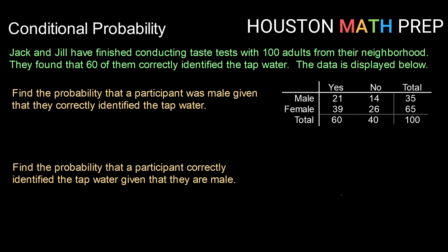We want to find the probability first that a participant was male given that they correctly identified the tap water. So writing that out, that would be the probability of male given that they correctly identified the tap water.